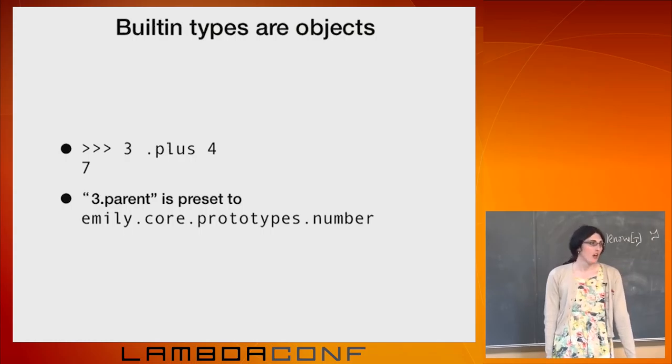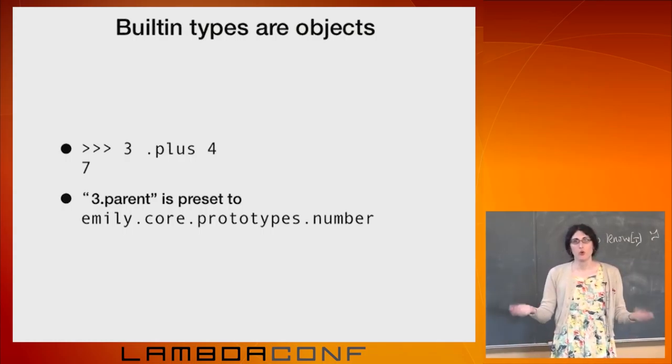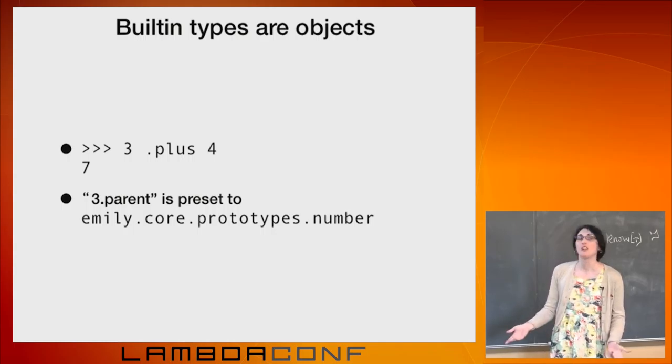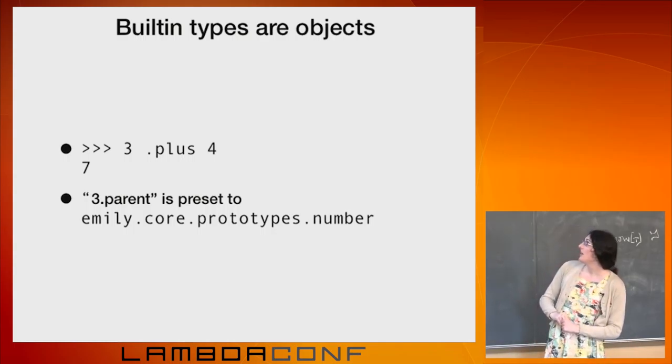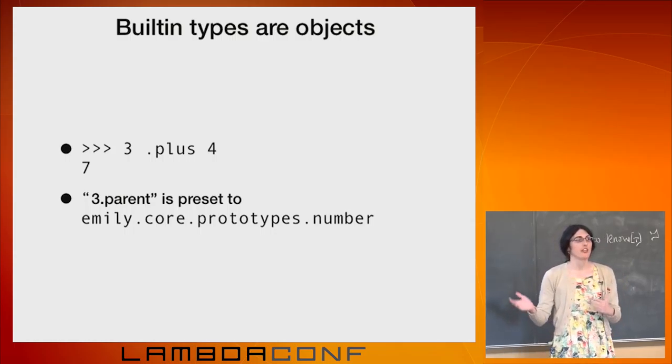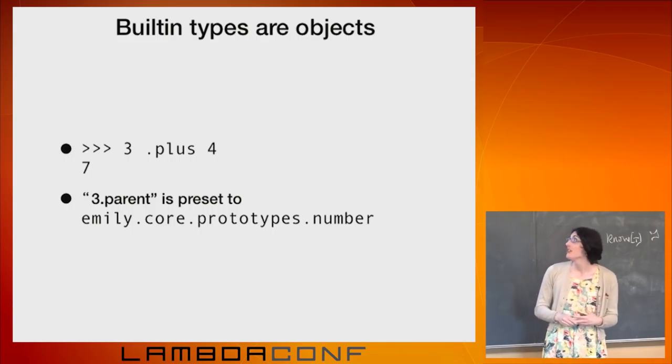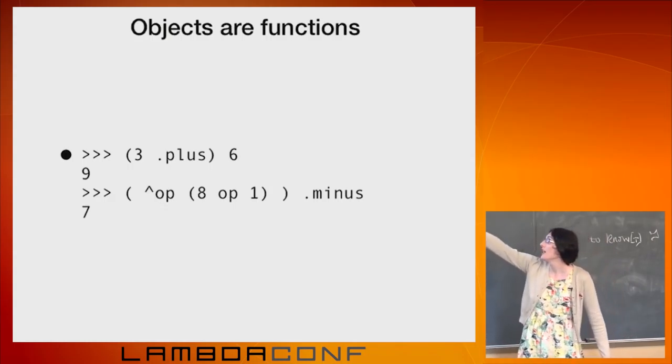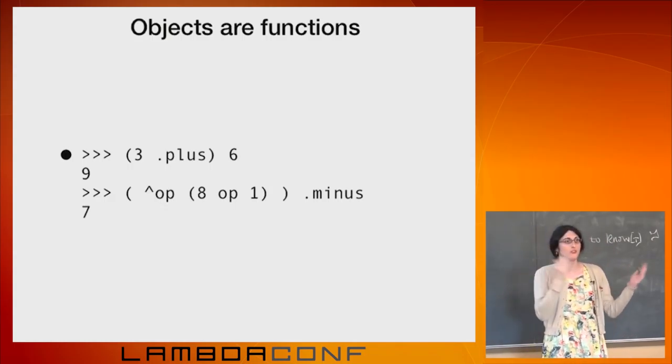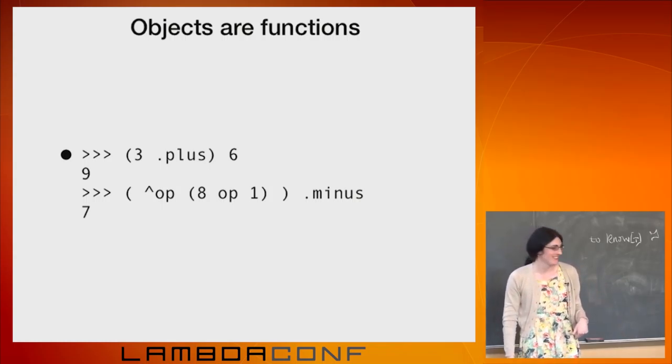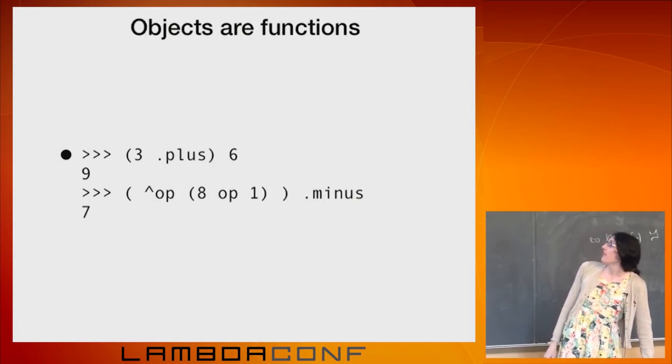The built-in types, things like 3, are objects. And their parents are these core prototypes. Somewhere there's a number prototype that has methods like .plus on it. So that means if I say 3.plus, well, 3 is an object, which means it's a function, which means that it can take the argument .plus and map that to a new function, which adds 3 to whatever you feed to it. And again, these are still just functions. So you could take that 3.plus, and instead of feeding it a number, you could just store it somewhere. You could think of this as currying on the 3 function.